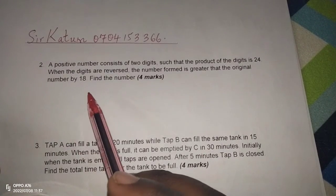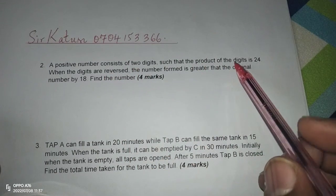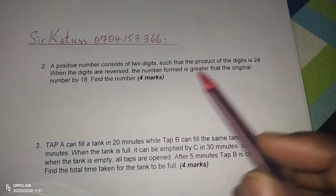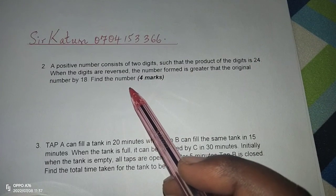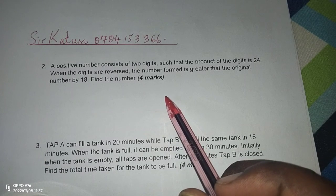We are told that a positive number consists of two digits such that the product of the digits is 24. Then we are told that when the digits are reversed, the number formed is greater than the original number by 18.